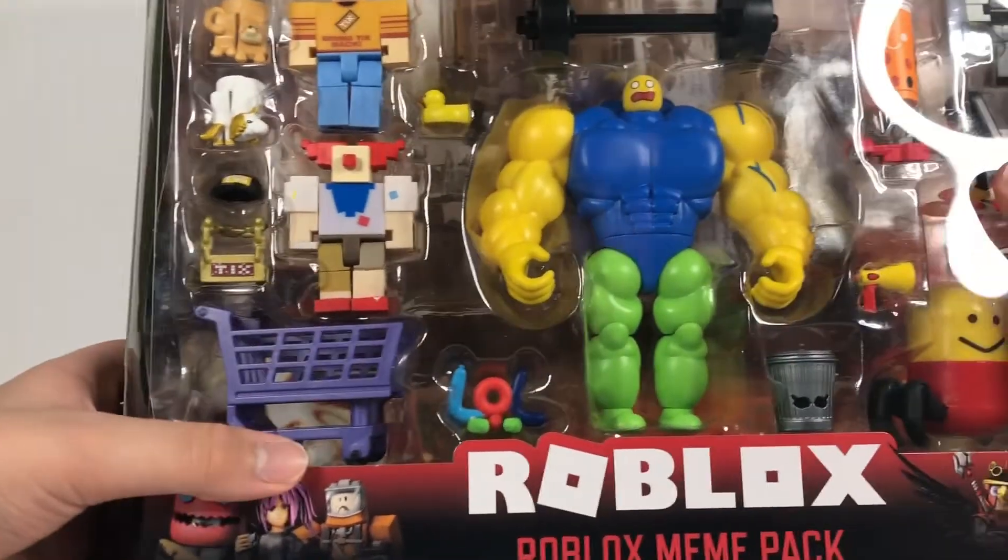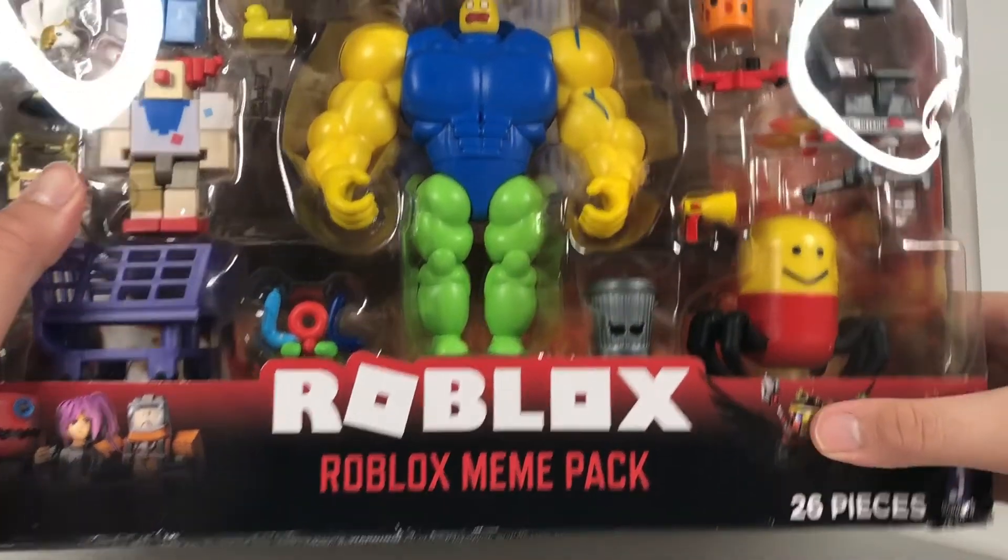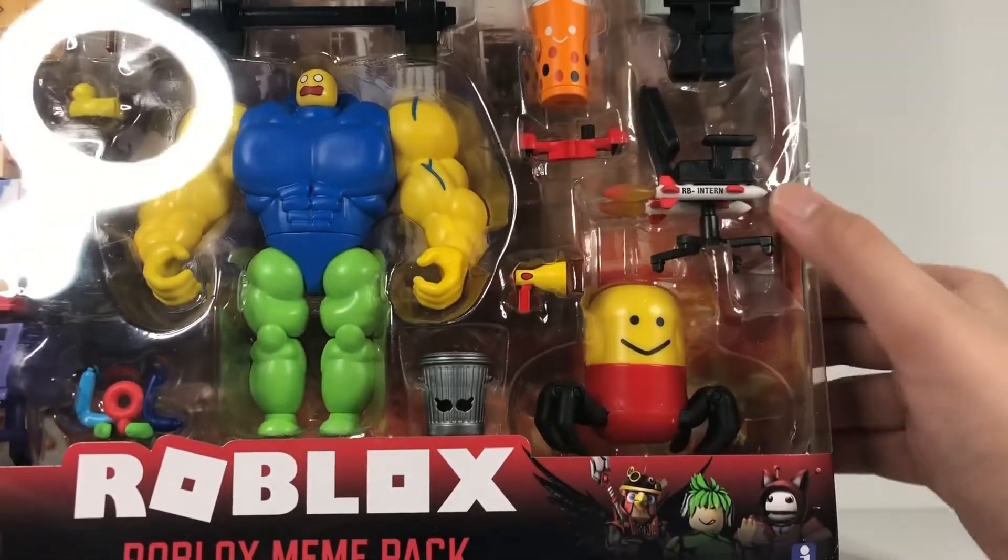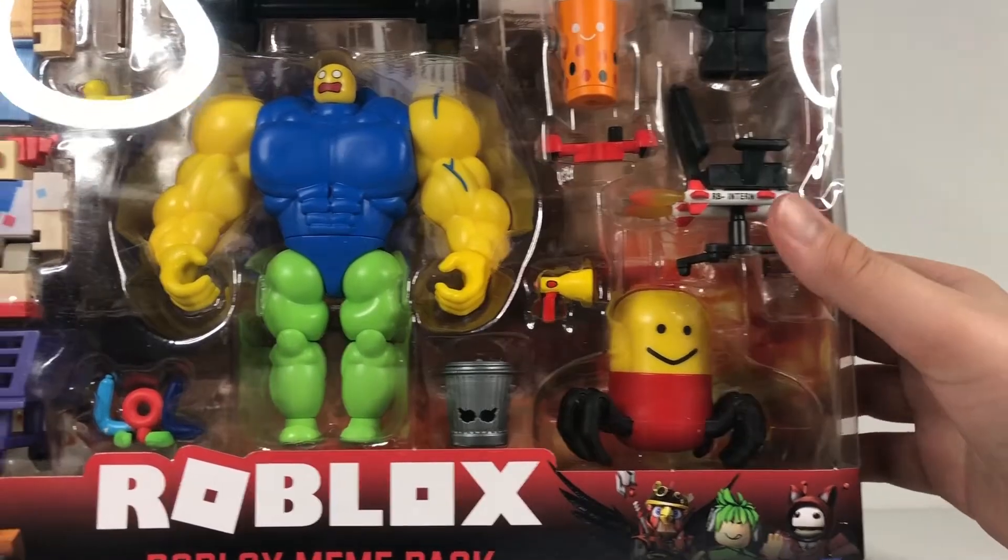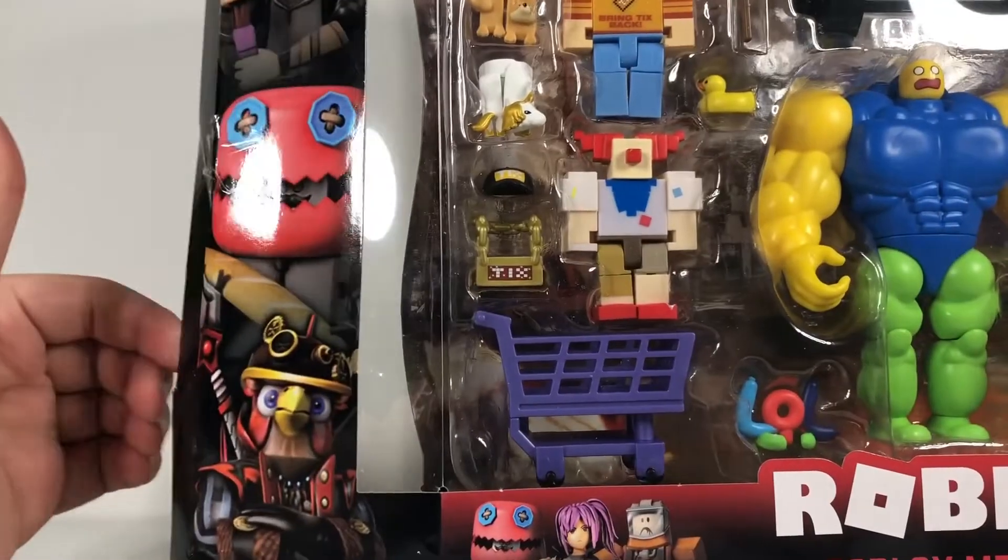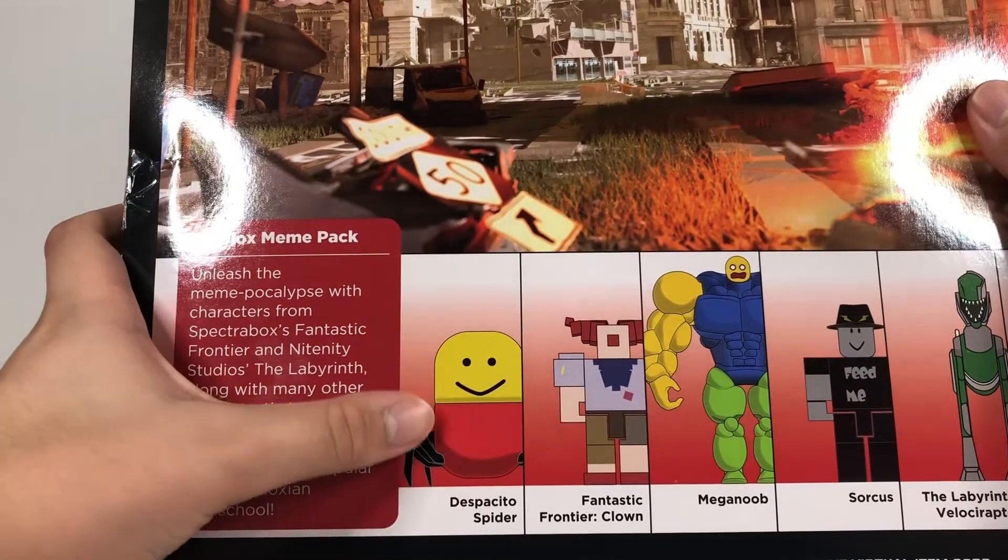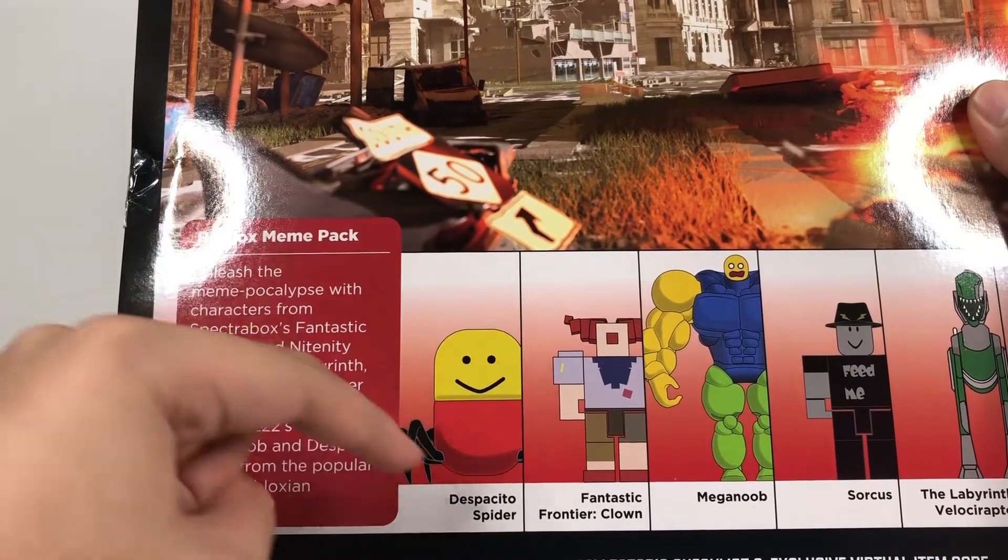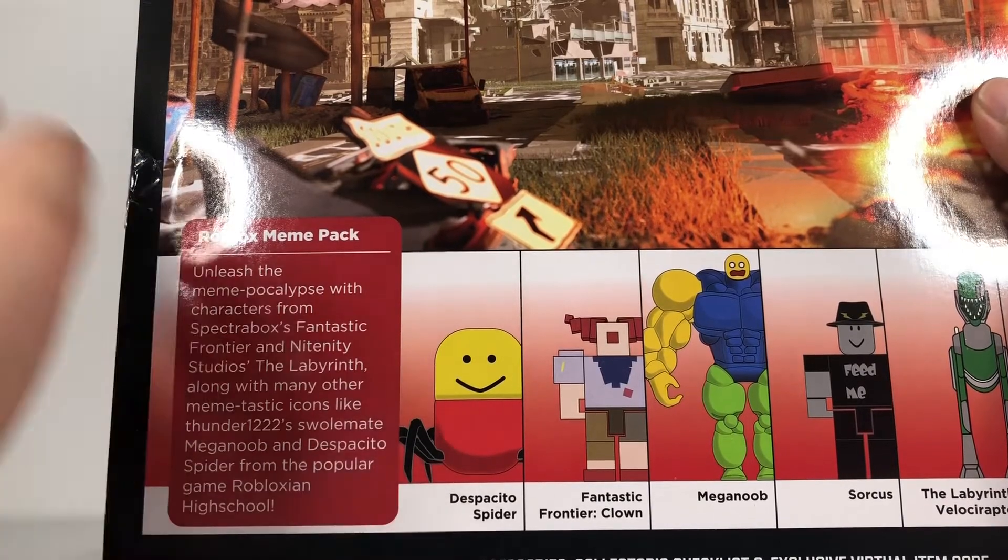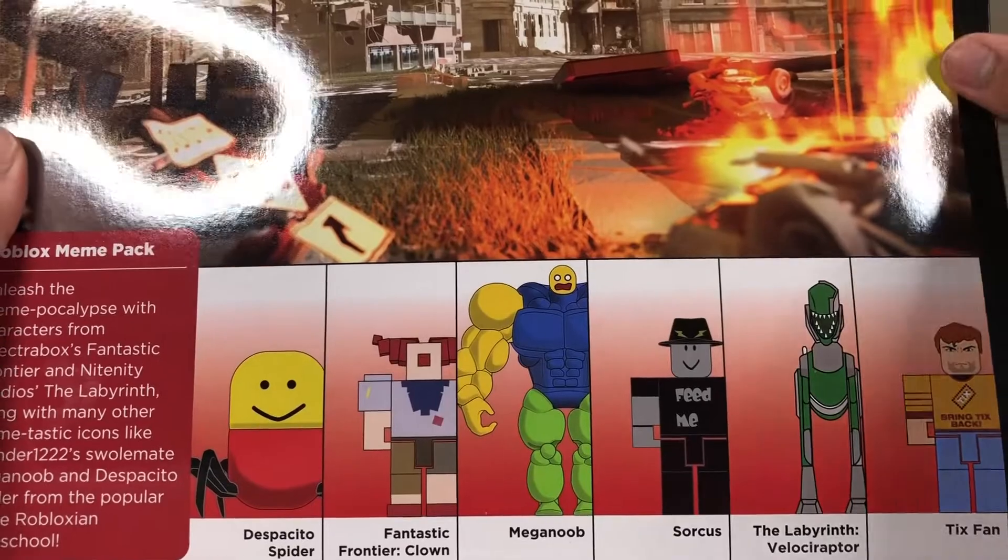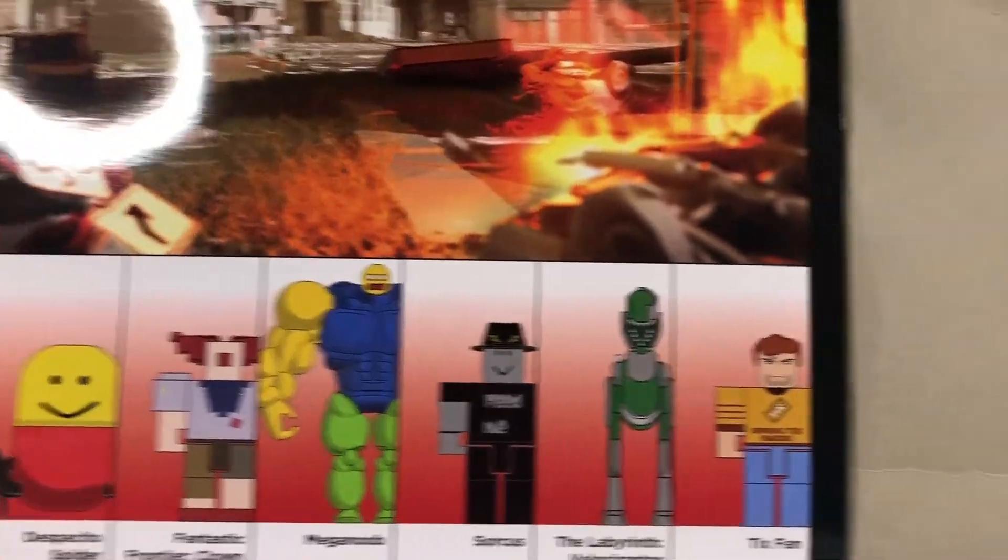It came damaged, so if you're a collector and want to resell it, maybe Amazon isn't the way to go because they never package things well. You can see it's damaged on half the corners and came open, but nothing's actually missing, which is good. The front shows all the characters. The main reason I bought this is because of the Despacito spider. Let's open it up and look at every character.